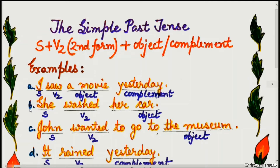Example B: She washed her car. 'She' is the subject, 'washed' is V2, and 'car' is the object.